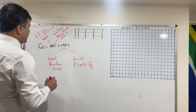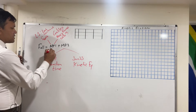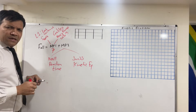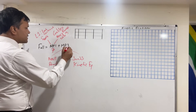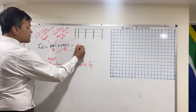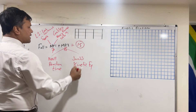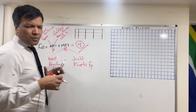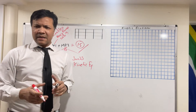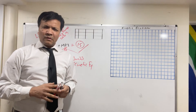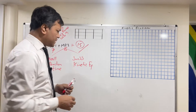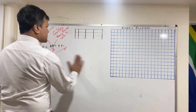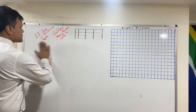In MP1 you needed to complete 7 labs to pass, and in MP2 you need 8 — for a total of 15 labs out of 19 that we did. So let's go over today's lab: Kinetic Friction.